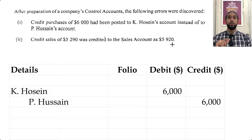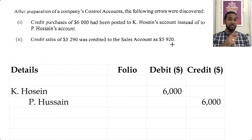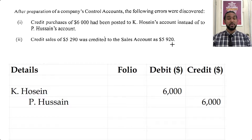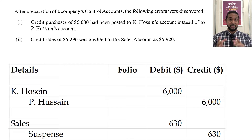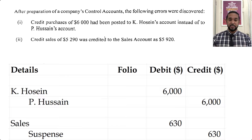Since we credited the sales account for a higher figure, we need to reduce it by making an entry on the opposite side — we debit the sales account for 630. We use the suspense account to provide the corresponding credit because it was a one-sided error. It wasn't an error of transposition, because that would have affected two accounts and not affected the trial balance — this only affected the sales account. That is how you correct that error.